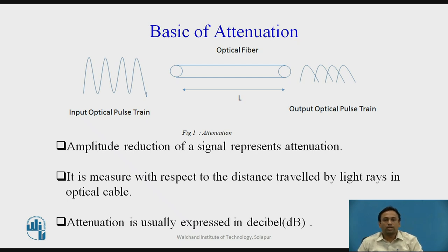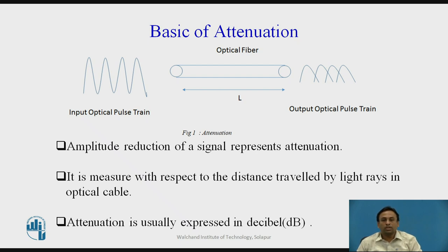I must ensure that pulses do not overlap and that the power level remains high enough for the optical detector to detect them, otherwise information will be lost. Before pulses overlap or their power drops below a certain limit, they must be reshaped to their original form. This is done by a device known as a repeater. In a communication link, pulses are sent through an optical fiber and reshaped at certain distances before being sent on to the next segment.